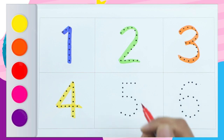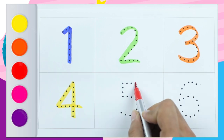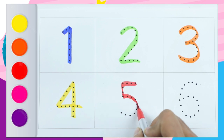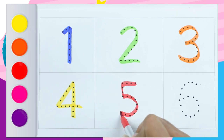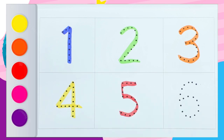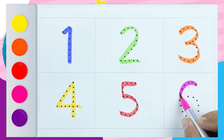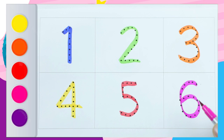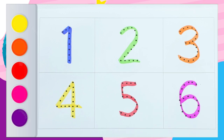Number five with red color — number five. Number six with pink color — number six. One, two, three, four, five, six.